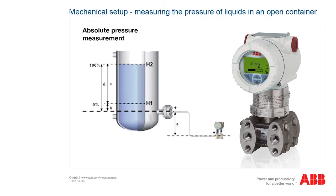To measure the level of liquids in containers, the sampling point must be located as low as possible on the container. The transmitter must be mounted at the same height as or below the minimum level to be measured. The pressure transmitter must be mounted with the cable entry pointing downward to prevent liquid ingress, and connection leads should be provided with a drip loop if possible. When calculating the level, the difference in installation height of the pressure transmitter to the sampling point must be taken into account.